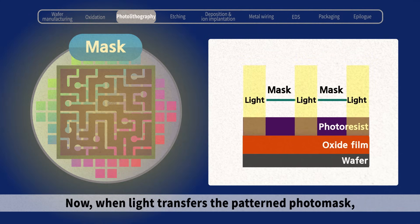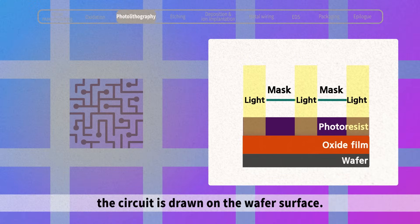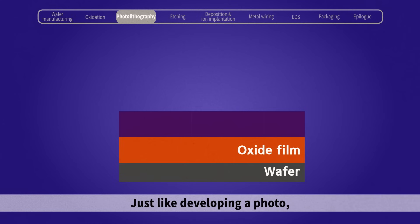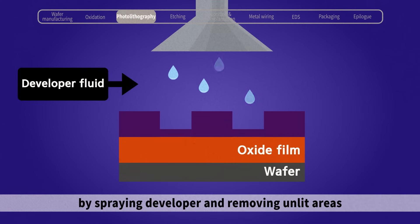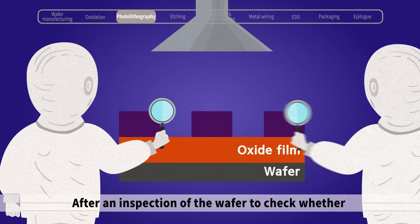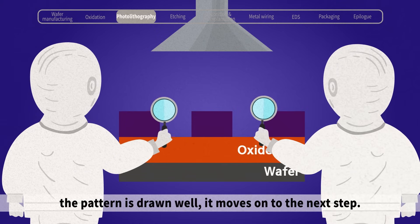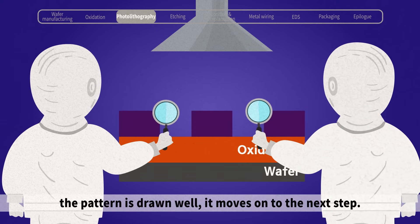When light transfers the pattern through the photo mask, the circuit is drawn on the wafer surface. Just like developing a photo, a circuit pattern is imprinted on the wafer by spraying developer and removing unlit areas from the areas that are exposed to light. After an inspection of the wafer to check whether the pattern is drawn well, it moves on to the next step.